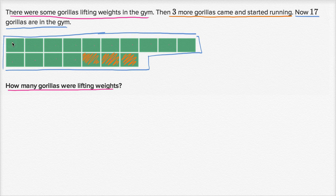So all the rest of these must have been there lifting weights. Counting them: 1, 2, 3, 4, 5, 6, 7, 8, 9, 10, 11, 12, 13, 14. So 14 gorillas were lifting weights — those are the ones marked in purple. Then three more came in and started running, and now there are 17. You can see the 17 blocks.